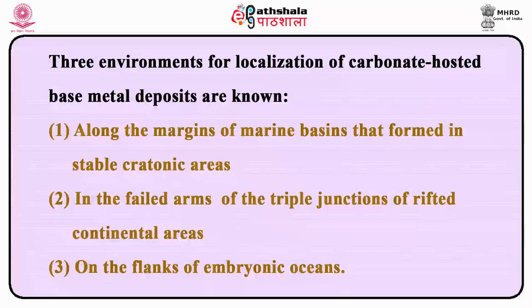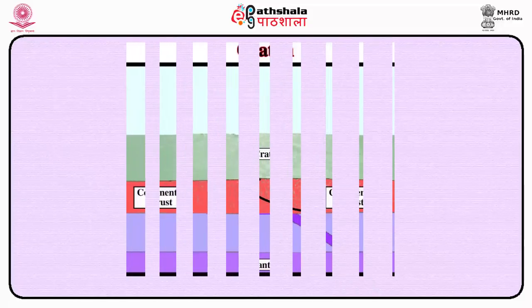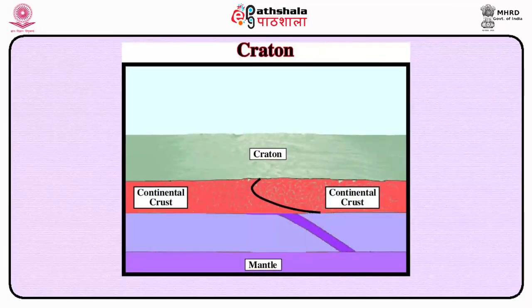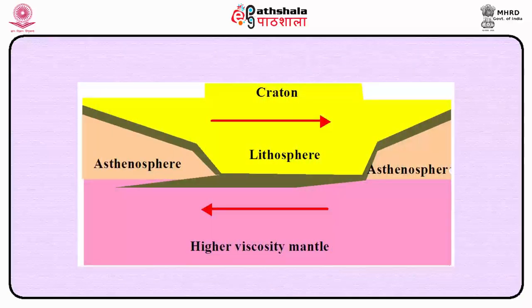Three environments for localization of carbonate-hosted base metal deposits are known: number one, along the margins of marine basins that formed in stable cratonic areas; number two, in the failed arms of triple junctions of rifted continental areas; and number three, on the flanks of embryonic oceans. In the cratonic basin shelf-sea environment, ore fields are present in positive areas of shallow water sedimentation, separated from each other by shale-rich basins. Such positive areas in the British Isles are often underlain by fractured older granitic masses, which can provide channelways for uprising hydrothermal solutions.